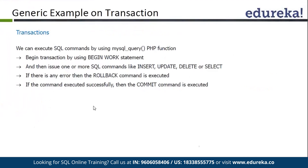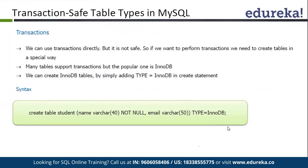We can execute SQL commands using MySQL query, and we can use transactions in PHP as well. We can use the MySQL query function to start, commit, or rollback transactions. Transactions can be executed straightforwardly, but it is always better to use a particular table type — specifically InnoDB tables. InnoDB tables are called transaction-safe tables, meaning transactions can execute perfectly on these tables and commit and rollback will work as per the ACID principle.